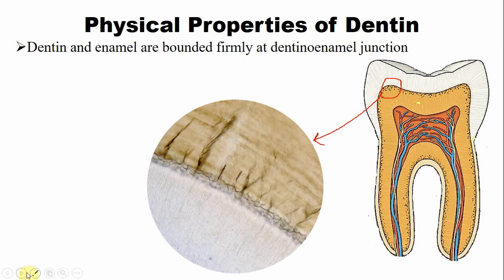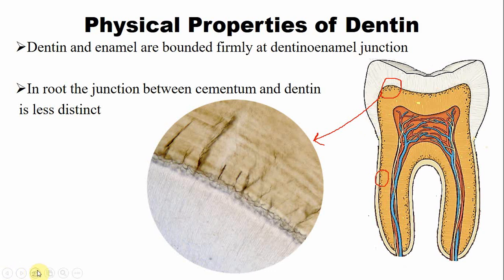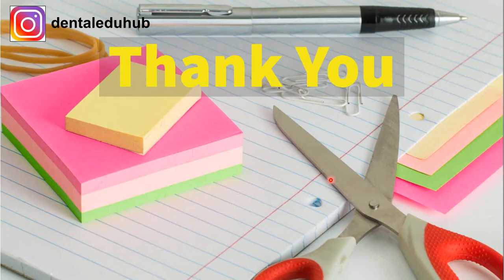On the root surface, the junction between cementum and dentine is known as the cemento-dentinal junction. Unlike the DEJ, the cemento-dentinal junction does not have a scalloped pattern — the cementum and dentine are straight at this junction. Thank you very much for your attention; please leave your feedback and questions in the comments.